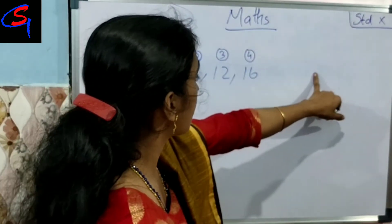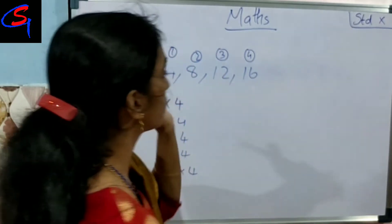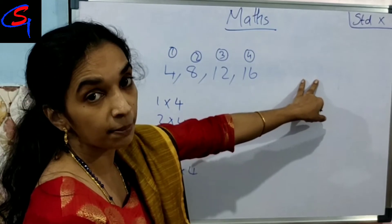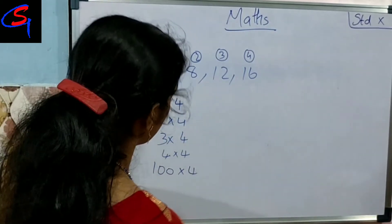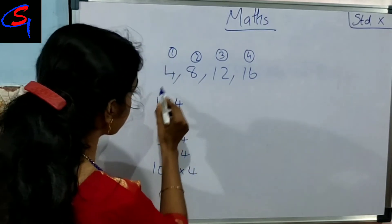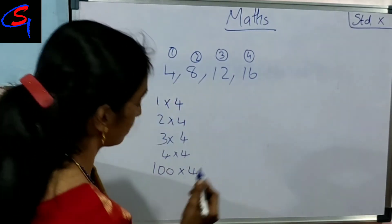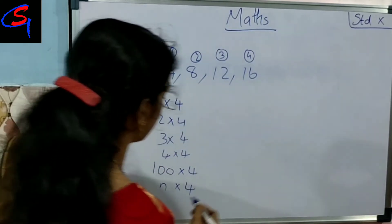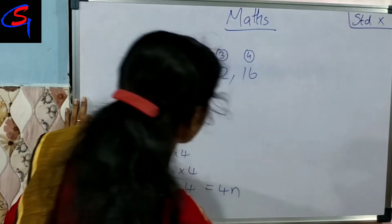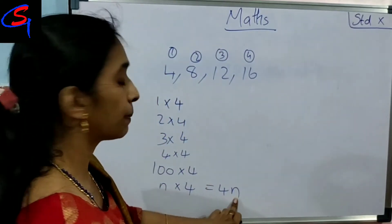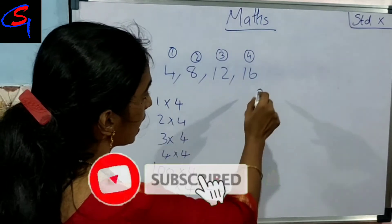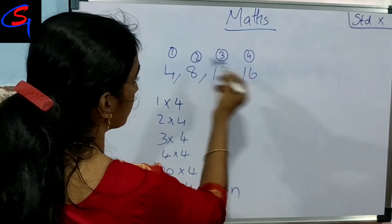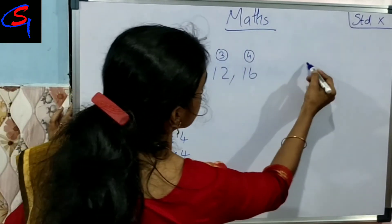This one is completed. Then the 10th — we will tell you what? That is 4n. Now, if we are talking about this, then we will add this one. 1, 2, 3, and this is 10.